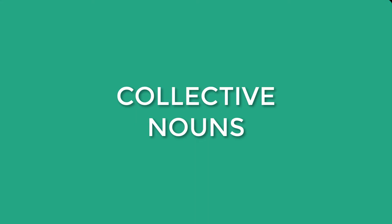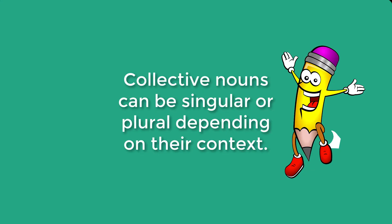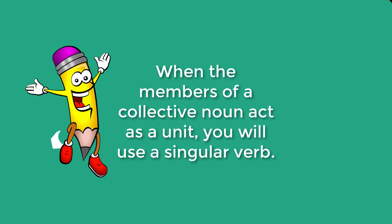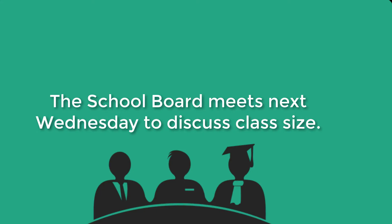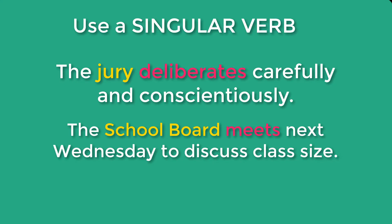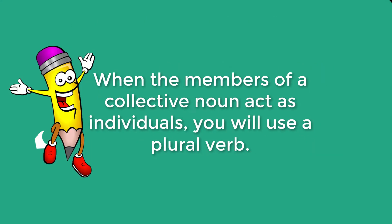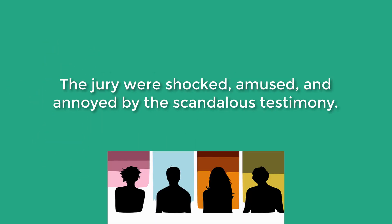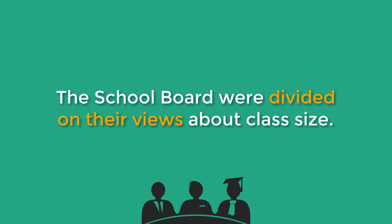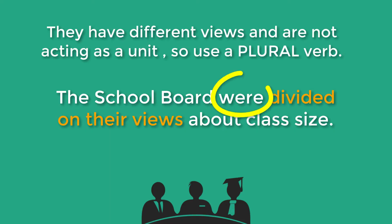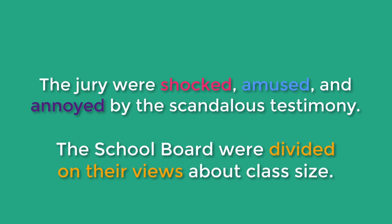Let's start with collective nouns. Collective nouns are singular or plural depending on their context. When the members of a collective noun act as a unit, you will use a singular verb. For example, the jury deliberates carefully and conscientiously. The school board meets next Wednesday to discuss class size. In both examples, the jury and the school board act as one singular unit. But when the members of a collective noun act as individuals, you will use a plural verb. For example, the jury were shocked, amused, and annoyed by the scandalous testimony. The school board were divided on their views about class size.